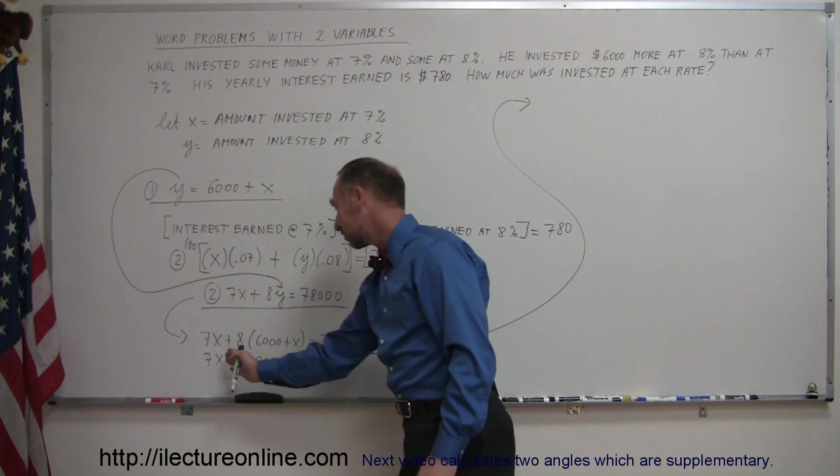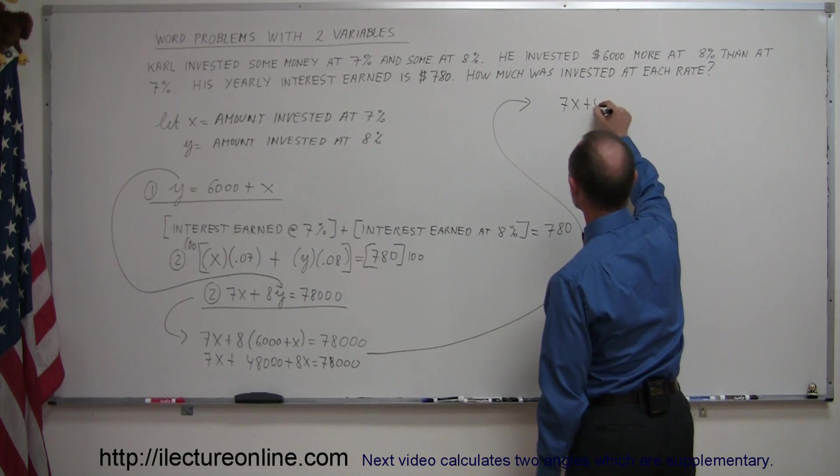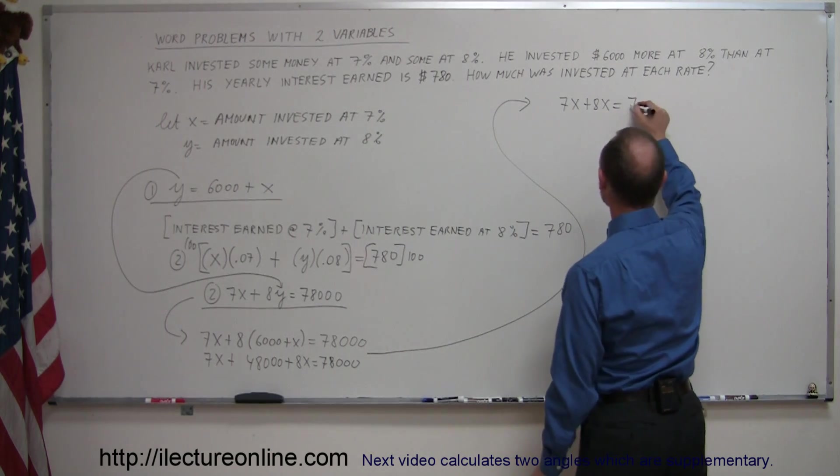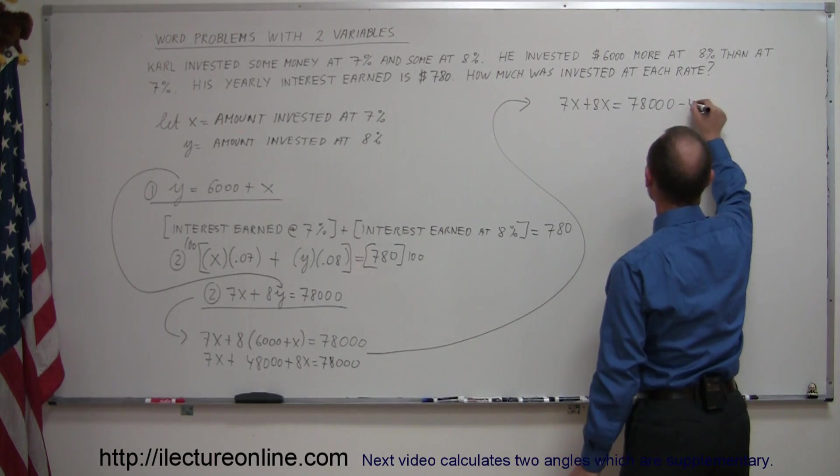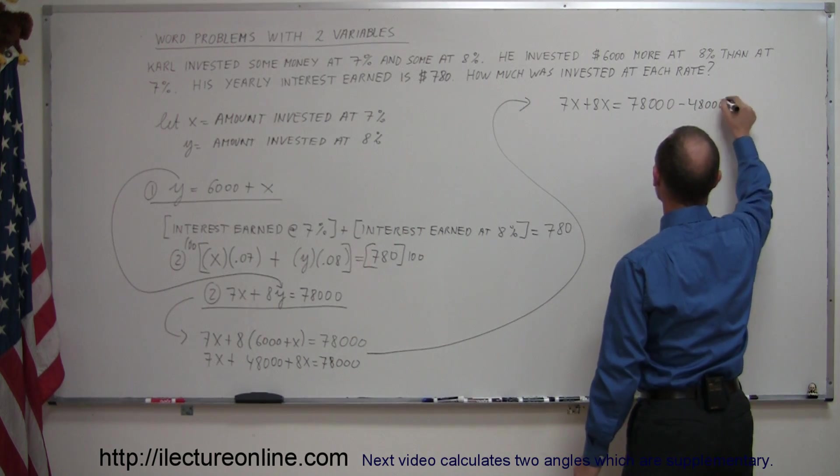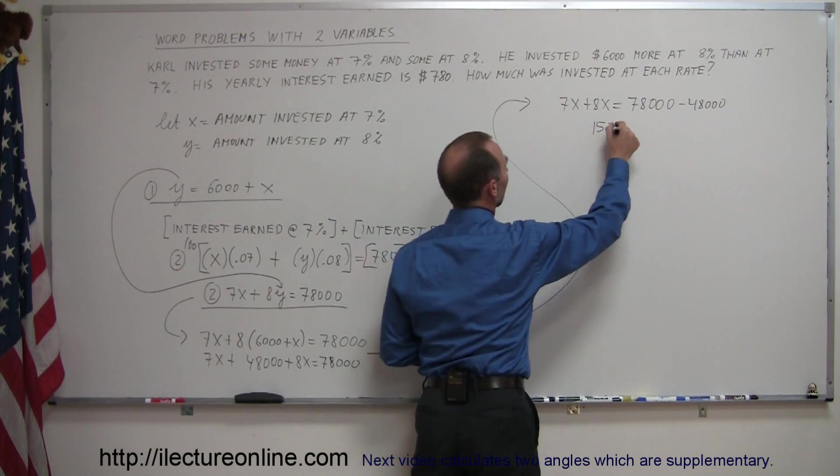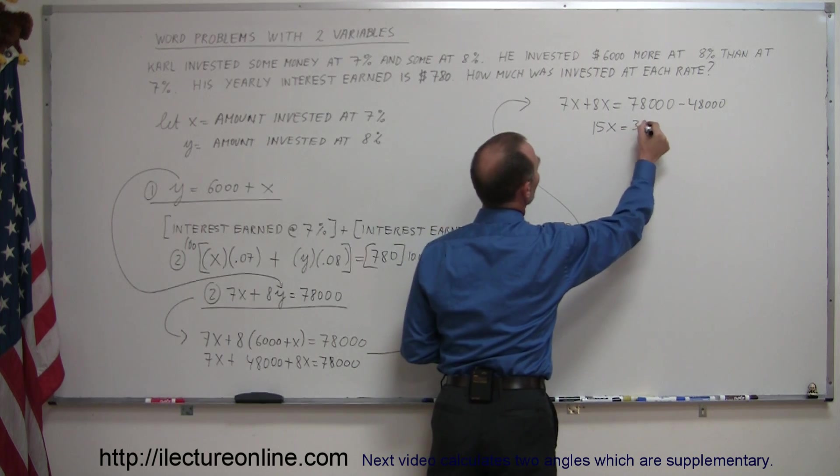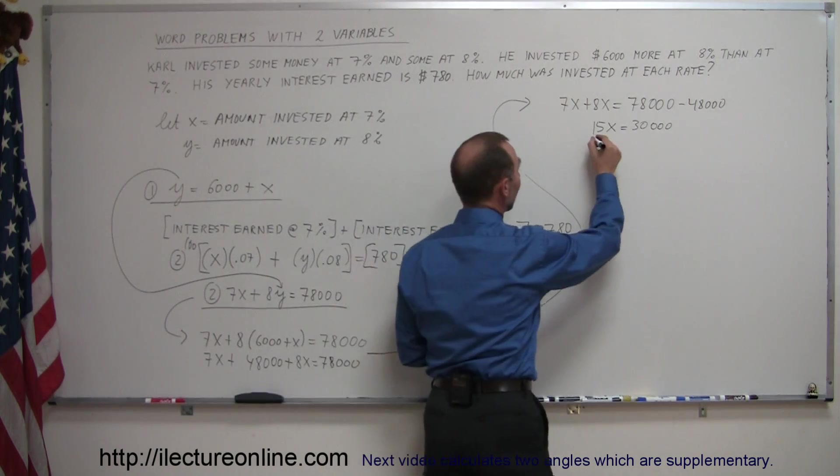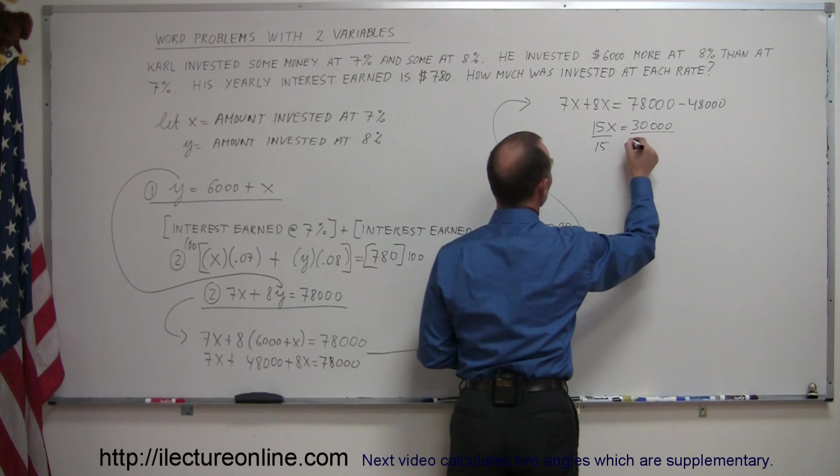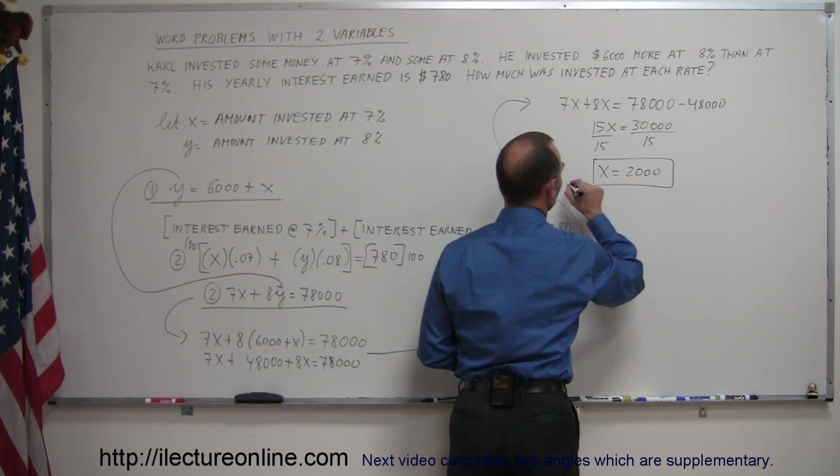I'm going to leave all the x's on one side, put all the numbers on the other side. On the left side I end up with 7x plus 8x, equals on the right side I already have 78,000, and when I bring the 48,000 across the equal sign that becomes minus 48,000. I can combine like terms. So 7x plus 8x is 15x, and 78,000 minus 48,000 is 30,000. Then finally I divide both sides of the equation by the coefficient in front of x, divide by 15, so x equals 2,000.